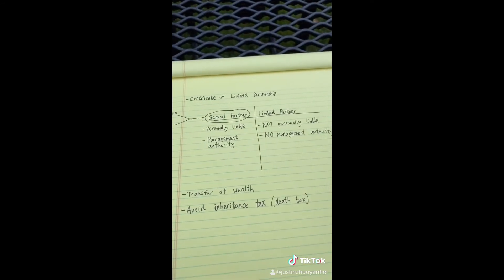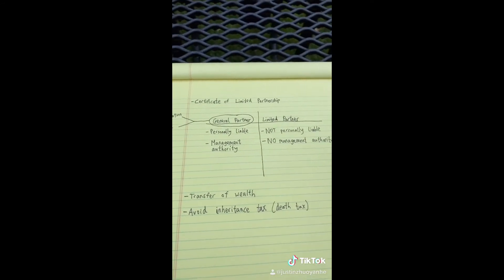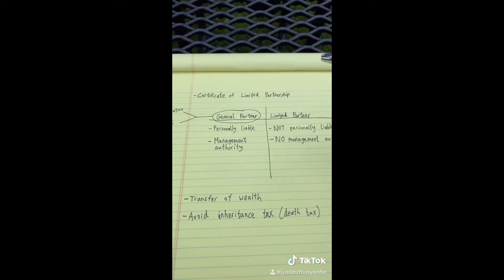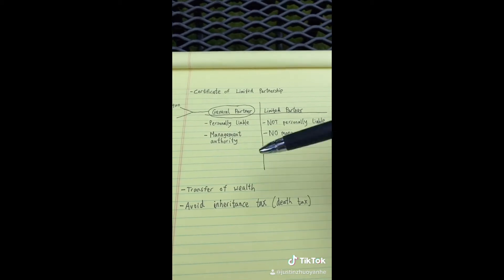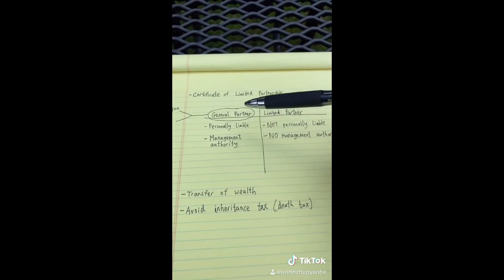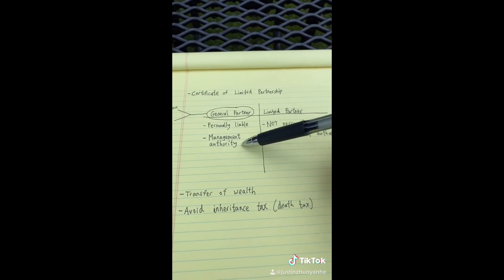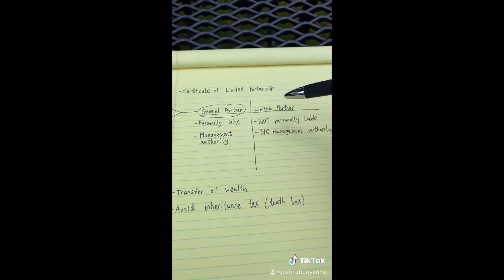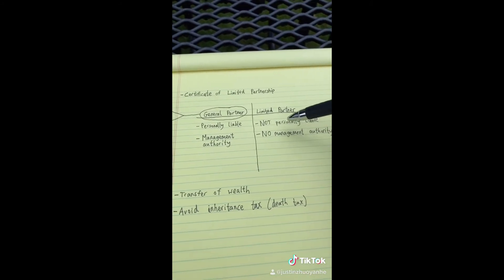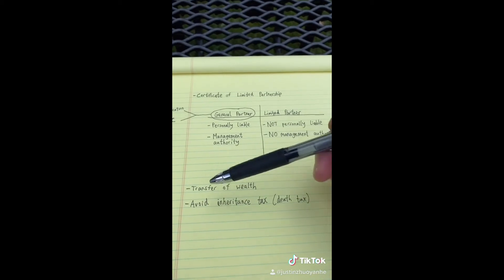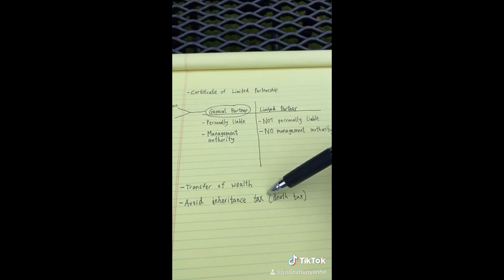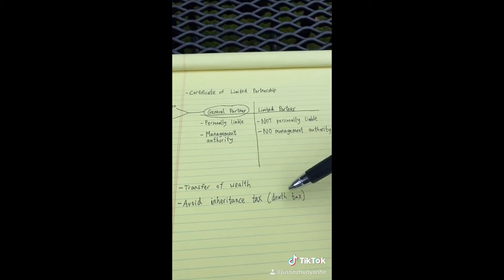You may wonder why people form limited partnerships. They are very common for transferring wealth to the next generation, because the older generation can manage the assets while the younger generation owns them without managing them. It's also a way to avoid the inheritance tax, also known as the death tax.